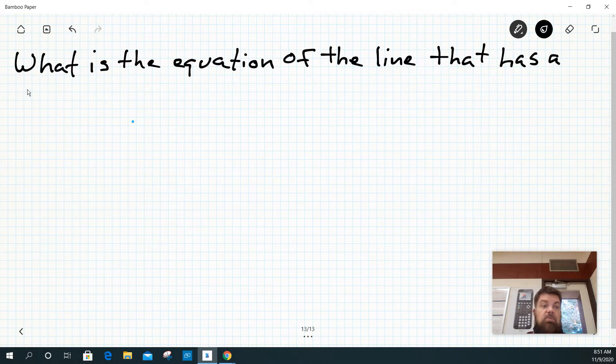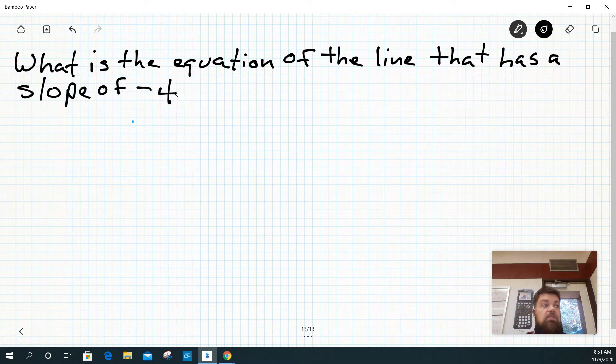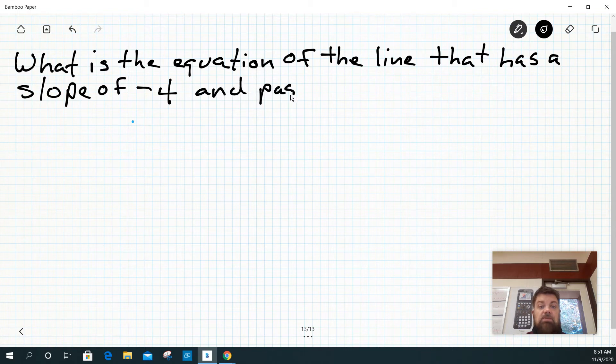a slope of negative 4 and passes through the point negative 1, 6.